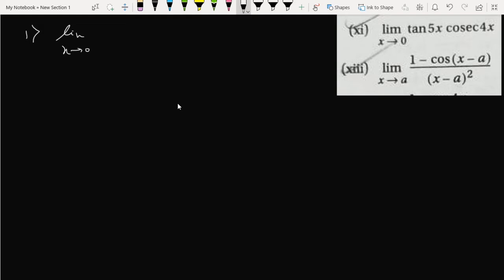As x tends to 0, 5x cosec 4x. If we put x equals 0, then 0 becomes 0 and cosec 0 becomes infinity, so we can't do this directly. So limit x tends to 0, I can write this as: